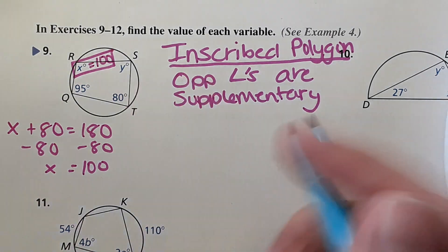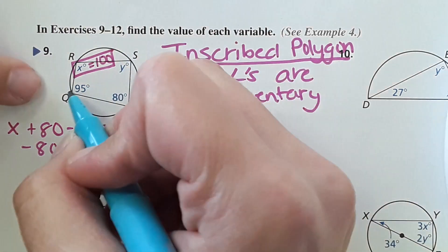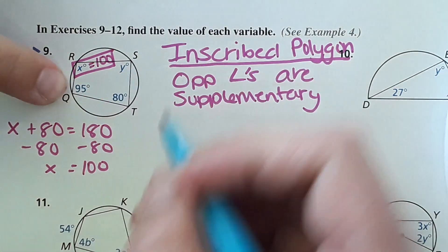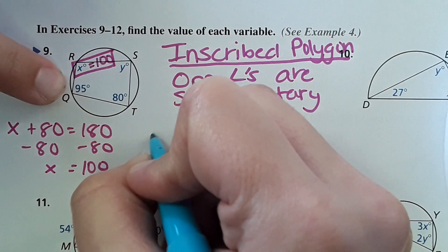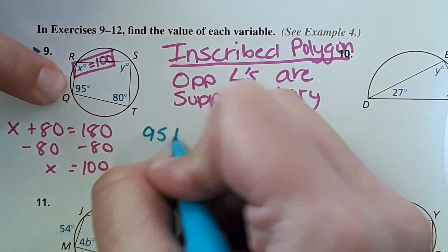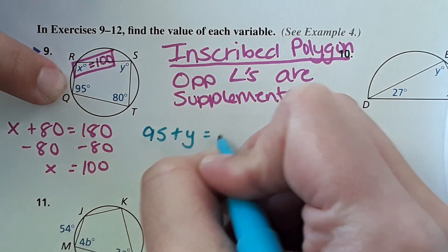For y, same idea — opposite angles are supplementary, so 95 plus y equals 180, giving y equals 85.